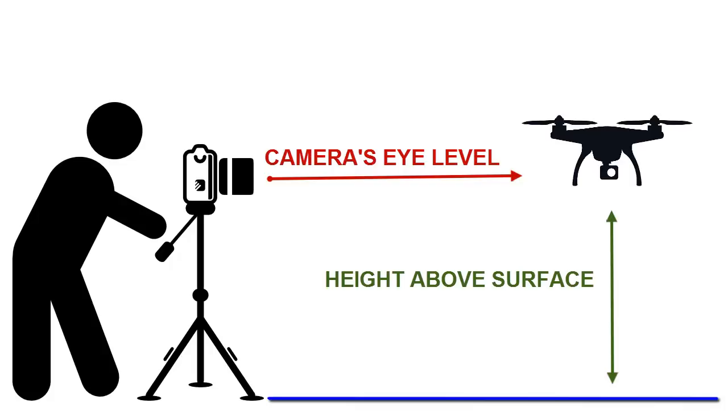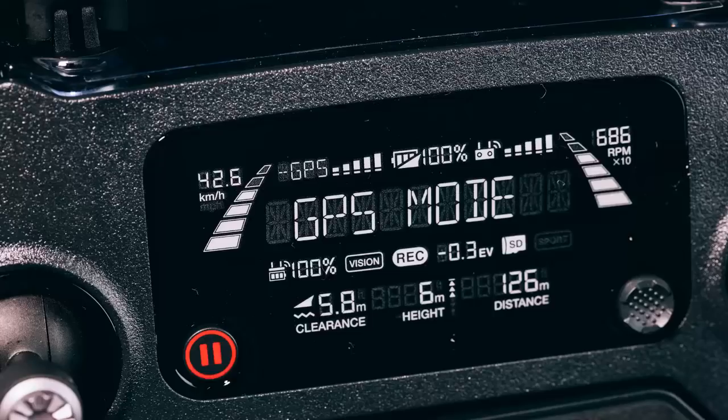So in order to try and avoid or eliminate that, it's best to get a high vantage point and let the drone tell you when it's at the camera's eye level how high above the surface it is just in front of you.